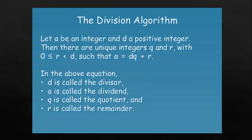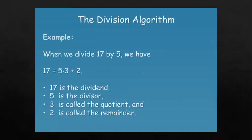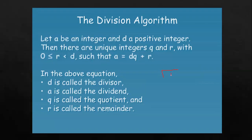Now the Division Algorithm: let a be an integer and d a positive integer. Then there are unique integers q and r with 0 less than or equal to r less than d, such that a equals d times q plus r. Here d is the divisor, q is the quotient, r is the remainder, and a is the dividend. This is the divisor which you divide by, and the quotient and remainder follow from it.